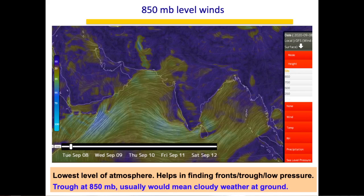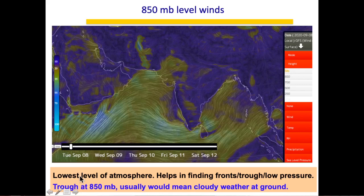At 850 mb, which is the lowest free-atmosphere level above the boundary layer, you can see nice organized circulation patterns. Open-source charts are available from earthnullschool.com, IMD, Windy, and others. The boundary layer — up to about 1 km — is affected by buildings and mountains, so those effects diminish from 850 mb upward, where clean circulation patterns become visible, helping identify troughs, low pressures, and fronts.